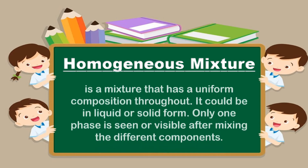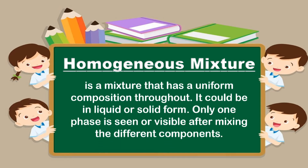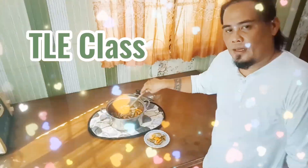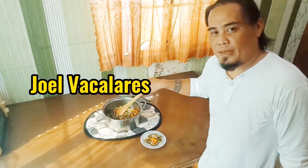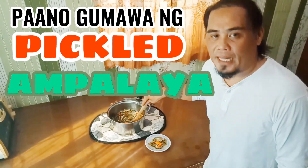A homogeneous mixture is a mixture that has a uniform composition throughout. It can be in liquid or solid form. Only one phase is seen or visible after mixing the different components. Now I am going to ask you to watch this video clip that Sir Joel made when he prepared pickled ampalaya (bitter melon). We will observe what happens to the ingredients that he mixed together to make pickled ampalaya.